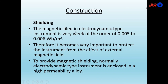The magnetic field produced by the fixed coils is very weak because of the air-core coil. The magnetic field in electrodynamic type instruments is very weak, of the order of 0.005 to 0.006 Weber per meter square. Therefore it becomes very important to protect the instrument from external magnetic fields. Magnetic shielding is provided by enclosing the instrument in a high-permeability alloy casing.